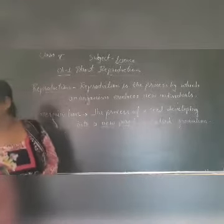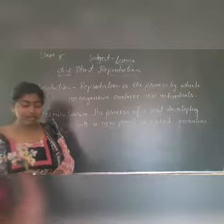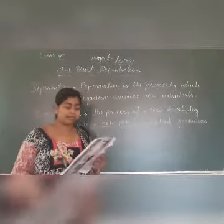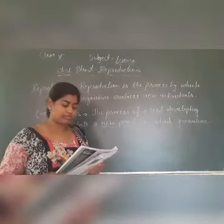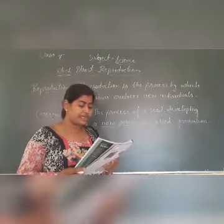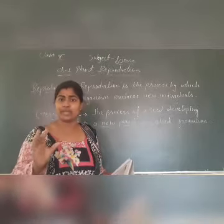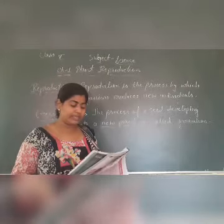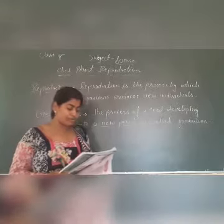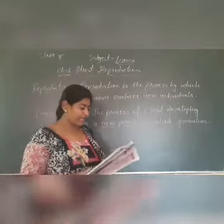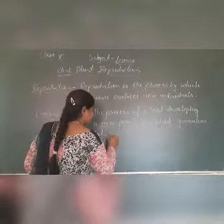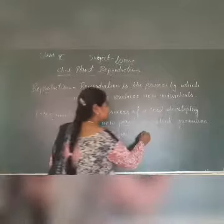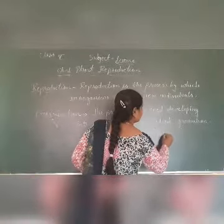Now, the germination process. During germination, when the seed receives adequate water — nischit matra — it swells and leads to the bursting of its seed coat. When the seed coat bursts, it releases the baby plant inside. Inside the seed, the developing embryo gets its food from the cotyledons. When we read the structure, what was in the cotyledons? There is a food store in the cotyledons.